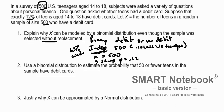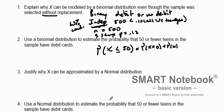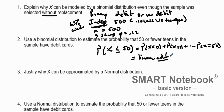Now use the binomial distribution to estimate the probability of 50 or fewer teens in the sample having a debit card. To do that we'd take the probability of X equaling 0, plus the probability of X equaling 1, and keep going all the way up to the probability of X equaling 50. We go to our calculator and use binomial CDF, which handles less-than-or-equal-to calculations. Our n value is 500, our probability is 0.12, and our x value is 50.